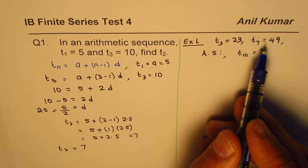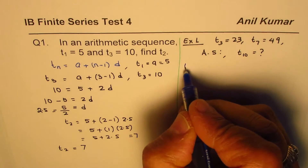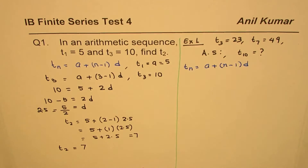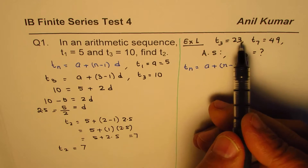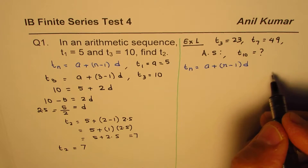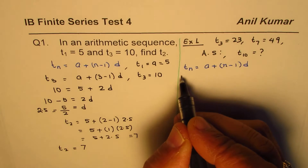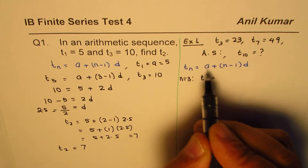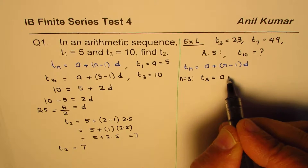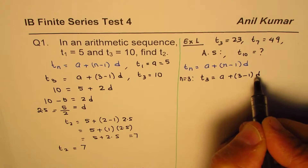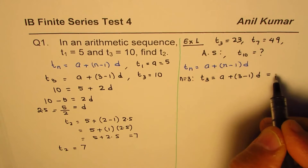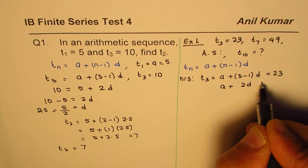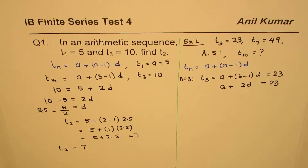In this question we are not given a and we are not given d — just two terms. Let's begin with the same formula: tn = a + (n-1)·d. Since we know the third term, substitute n=3: t3 = a + (3-1)·d. This value equals 23, giving us: a + 2d = 23. That becomes our first equation, with two unknowns, a and d.